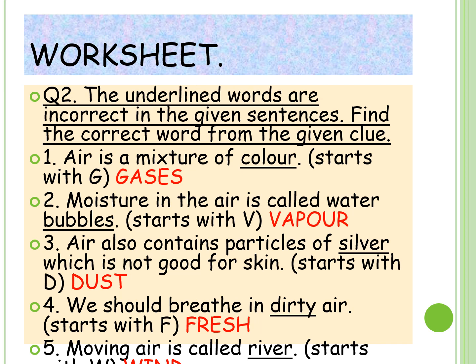Question 2: The underlined words are incorrect in the given sentences. Find the correct words from the given clues. The underlined words are incorrect, so with the given clue we have to write the correct answer. First sentence: Air is a mixture of colour — that is wrong. The clue starts with G. So the correct answer is: air is a mixture of gases.